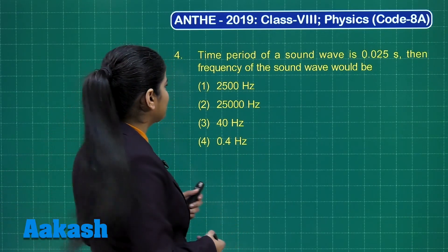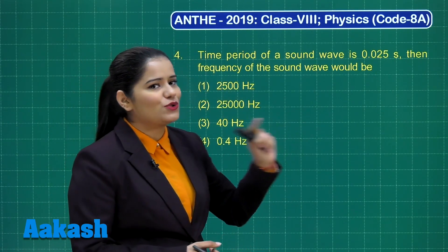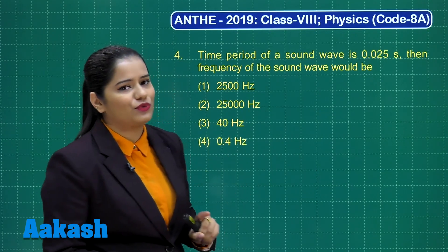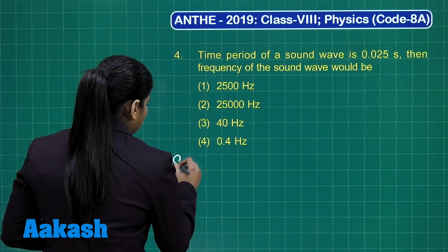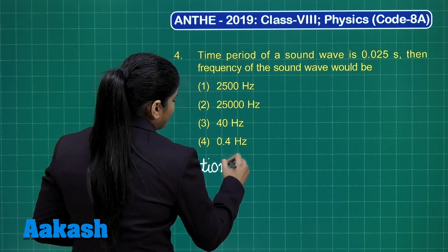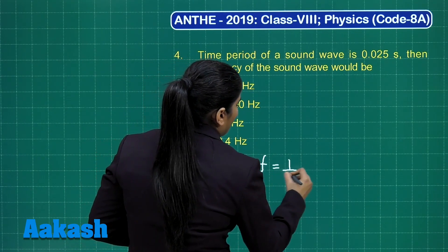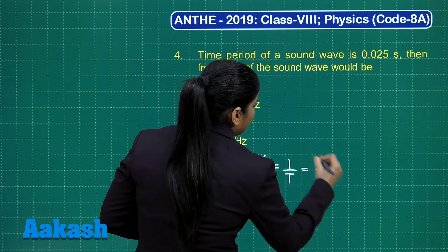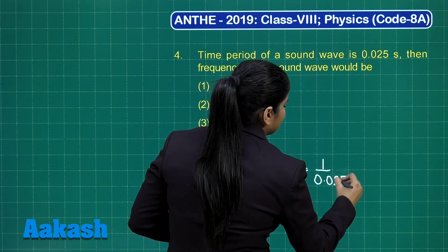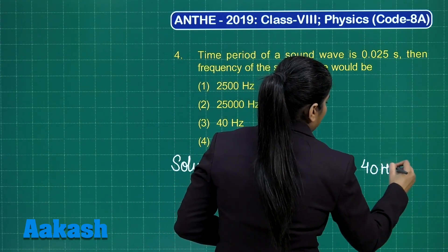Here is the fourth question for our discussion: the time period of a sound wave is 0.025 seconds. The frequency of the sound wave would be? The relation between time period and frequency is that frequency is the reciprocal of time period. So, when you reciprocal the time period given to us, you get the frequency as 40 Hz.